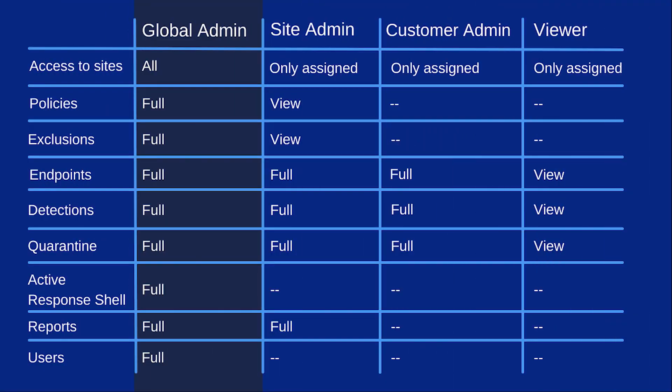Global administrators have unrestricted access to the OneView console and all customer sites within. Only global administrators are able to manage policies and exclusions for any sites. Site administrators have view and edit access to all customer sites they have been assigned. Customer administrators can manage their site's endpoints, detections, and quarantine, but cannot affect the setup of the site.